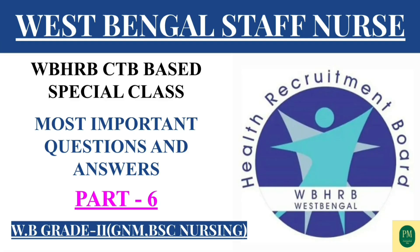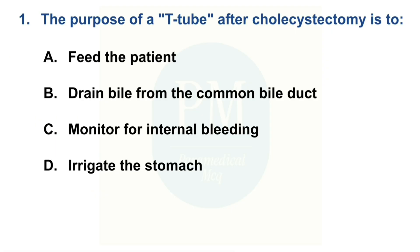The first question: The purpose of a T-Tube after cholecystectomy is to. Option A: Feed the patient. Option B: Drain bile from the common bile duct. Option C: Monitor for internal bleeding. Option D: Irrigate the stomach. The correct option is Option B — Drain bile from the common bile duct.